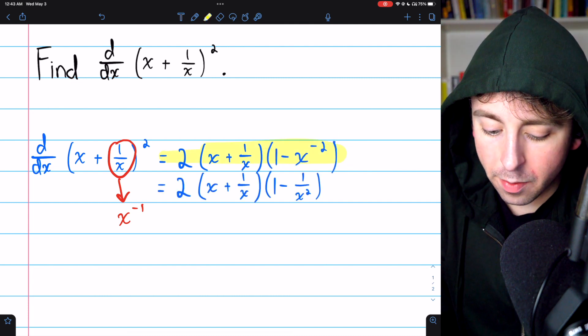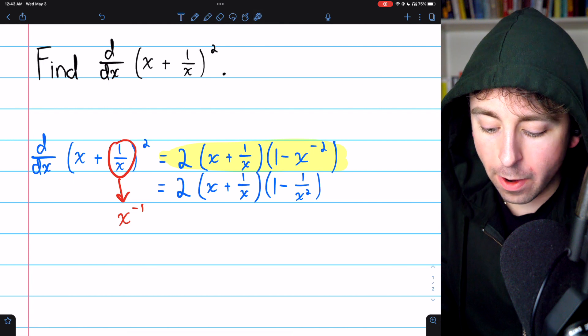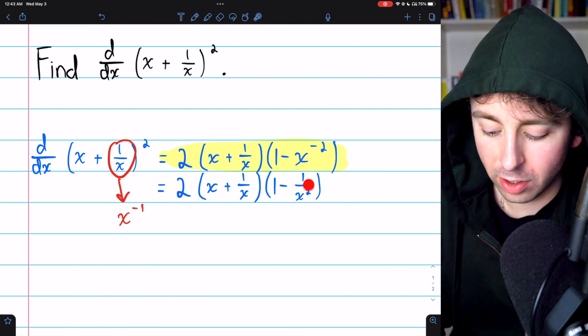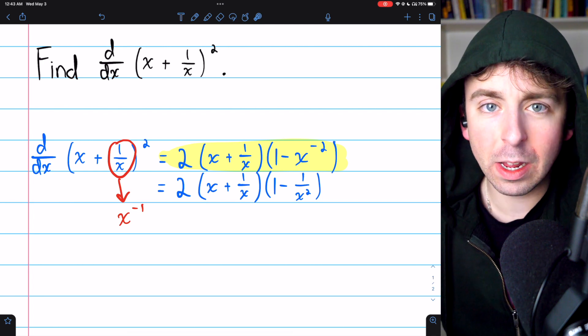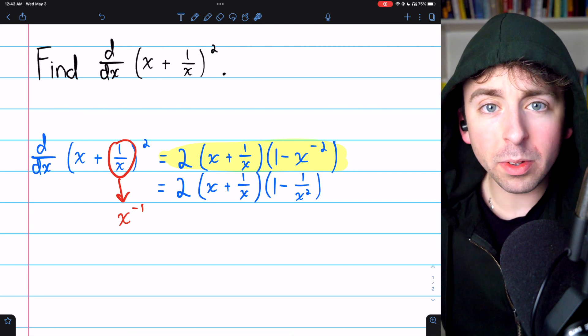And that's the derivative of x plus one over x squared. Or if you prefer the fraction to the negative exponent, you could write it like that. All you have to do is use the chain rule and use the power rule. Hope that was helpful.